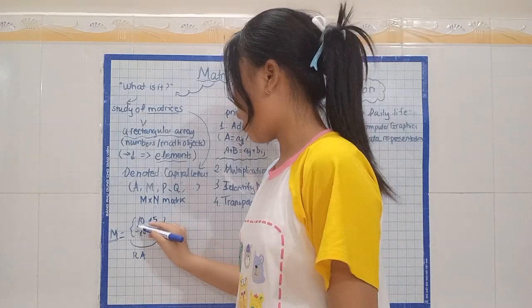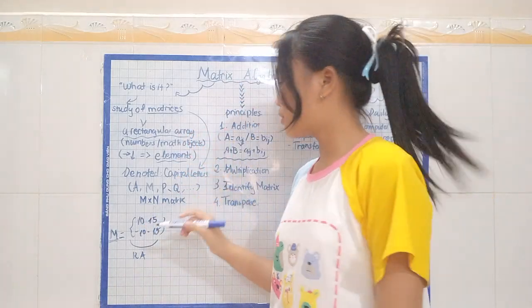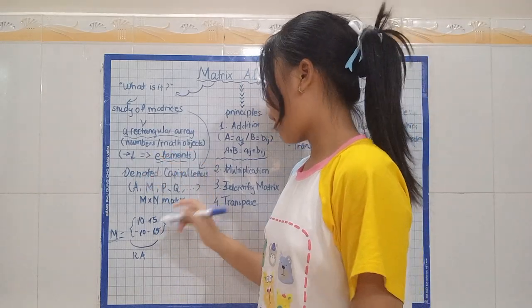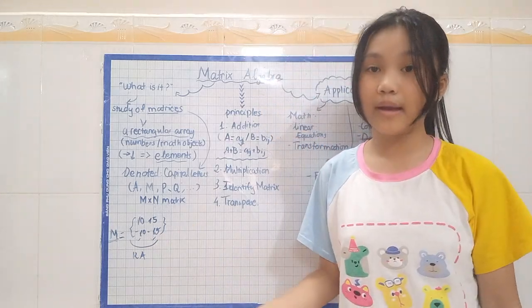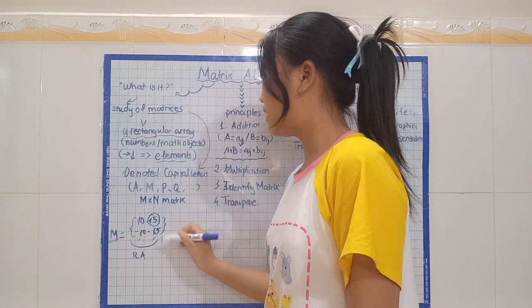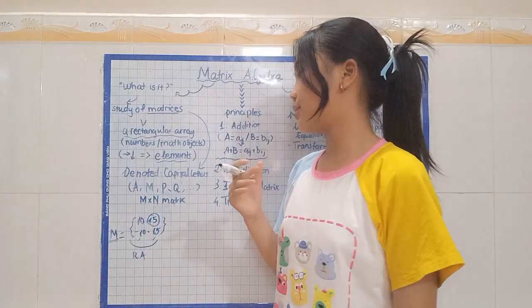First, it's about its rows. It has two rows: first row and second row. It has two columns: first column and second column. Actually really easy, right? And each number here, we call these elements.